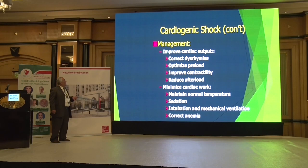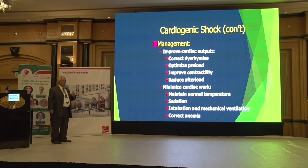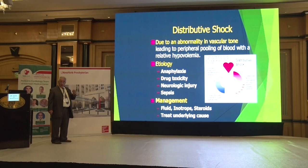How do we manage cardiac failure? We need to improve cardiac output. If there is arrhythmia, correct it. Optimize preload — fill the tank. Improve contractility with inotropes and reduce afterload. Decrease the work of the heart: maintain normal temperature, sedate the patient, intubate and put on ventilator. Correct anemia if present — in cardiac failure we accept a hemoglobin of 13 and above.